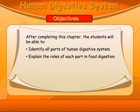Human Digestive System. Objectives: After completing this chapter, the students will be able to identify all parts of the human digestive system, and explain the roles of each part in food digestion.